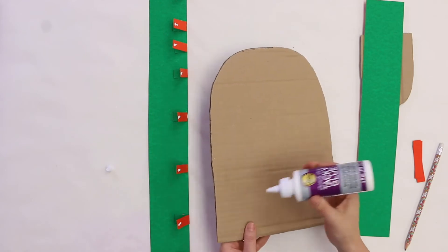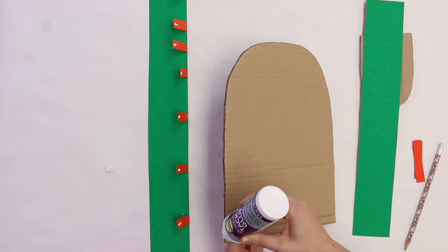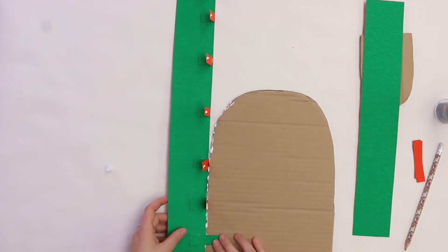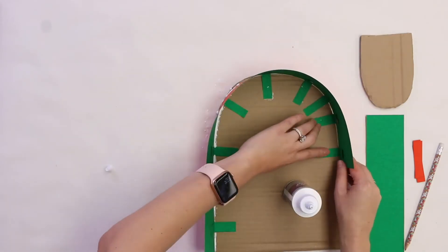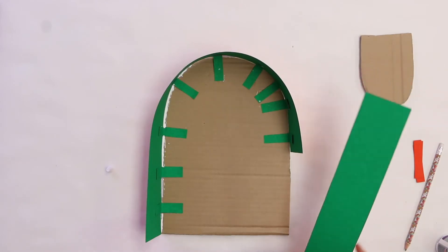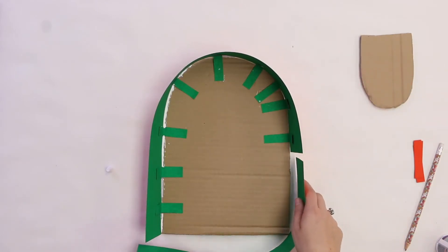We're also going to take our tacky glue and put some around the edge of our cardboard. Now we're going to take our second strip of poster board and do the exact same thing to finish out the shape of our popsicle.